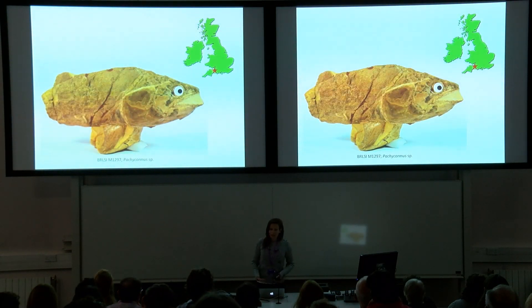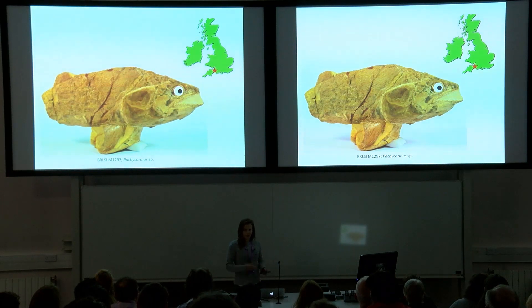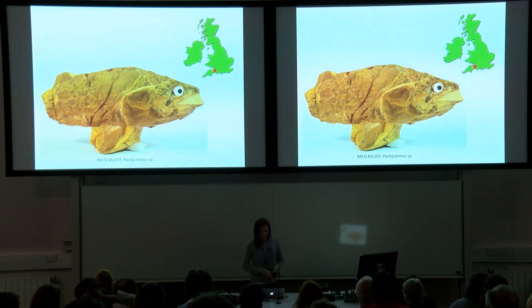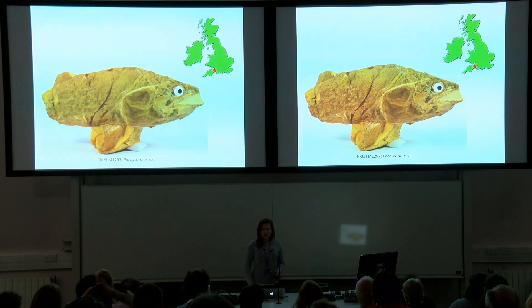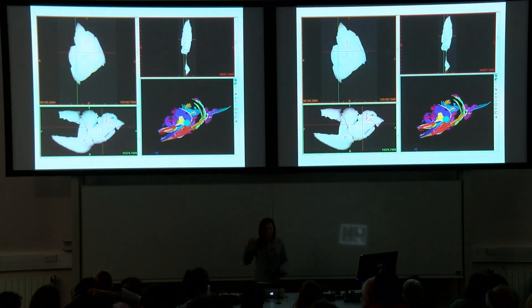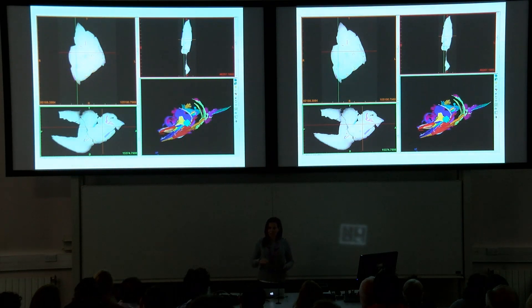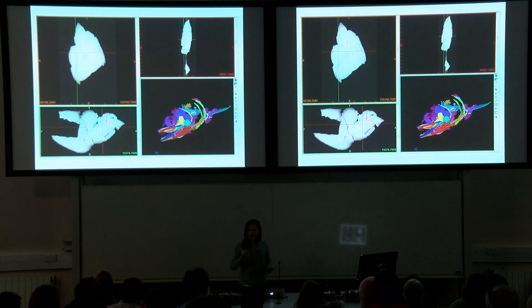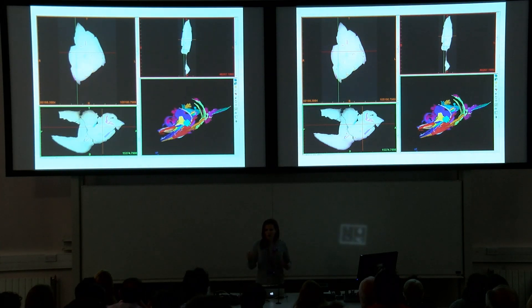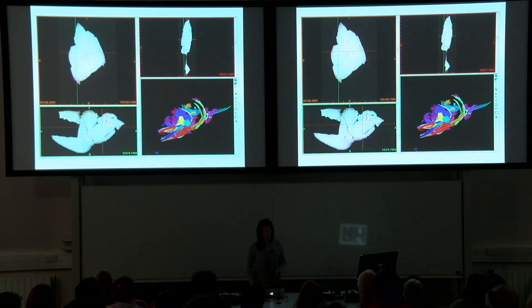This is the fossil I used — from the Toarcian deposit of Strawberry Bank, housed at the Bath Royal Literary and Scientific Institution and scanned at the University of Bristol. I then imported that scan into Mimics and segmented out all the internal structures I could find, then rendered those structures in Blender so I could look at individual structures or in their anatomical context to describe and identify characters for a phylogenetic analysis.